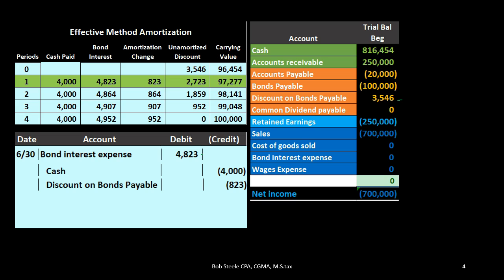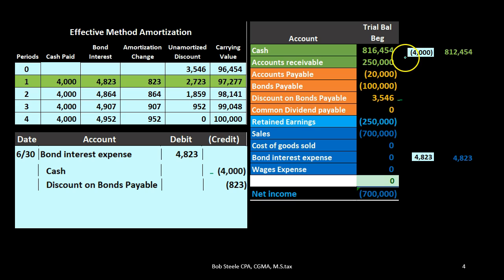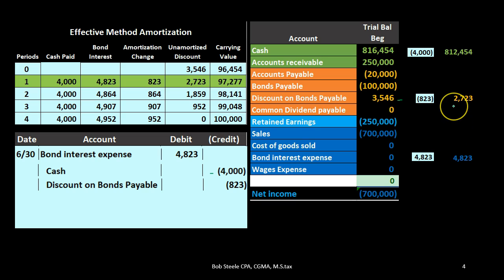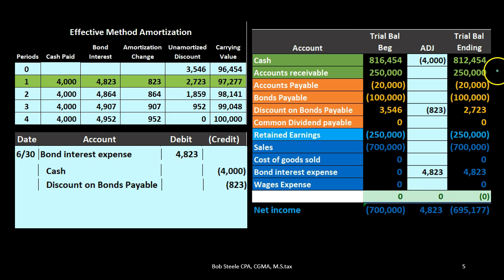When we post this, bond interest goes up and brings net income down. Cash goes down because we're paying $4,000 in interest. But we're applying $4,823 to interest — why? Because we're also reducing the discount and applying that to interest. The bond discount came from the difference between the market rate and the stated rate. The bond interest goes up by more than the cash we paid because we're allocating this discount to bond interest as we pay off the bond.